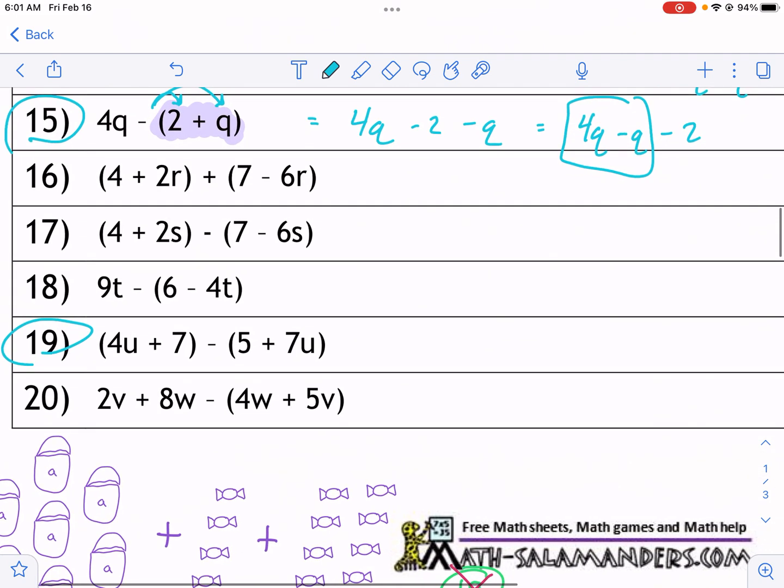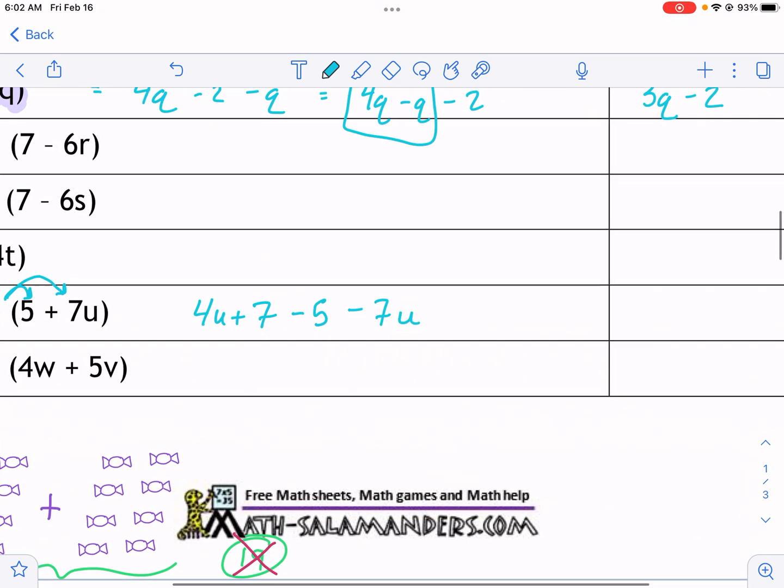Last problem we have four u plus seven minus five plus seven u. Again, we need to use this distributive property first, we need to rewrite this without parentheses. Now, because for the first set of parentheses, we can't add anything inside, we can't combine bags of candy with individually wrapped candy, we can just go ahead and get rid of the parentheses. There's nothing we're multiplying out in front, there's no minus sign. So we can go ahead and get rid of it. Now the second parentheses we can get rid of after we distribute. So we distribute the minus to minus five and also minus seven u.